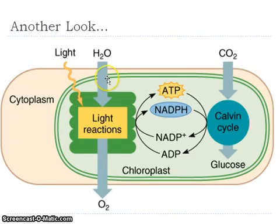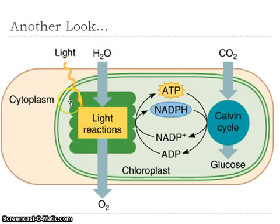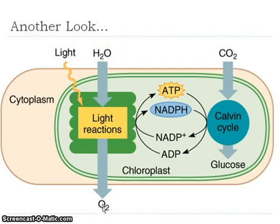Here we go again. We have our light reactions that we just covered — light's coming in, it's located in our thylakoid. We're taking in water and splitting it, releasing the oxygen into the atmosphere, and we are charging up these NADP and ADP molecules so we have usable forms of ATP and NADPH.